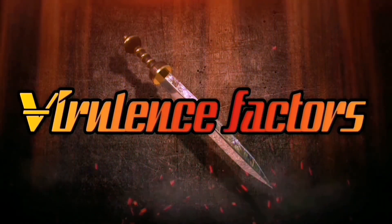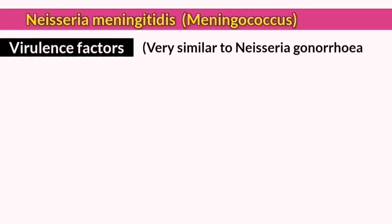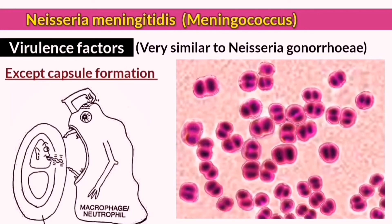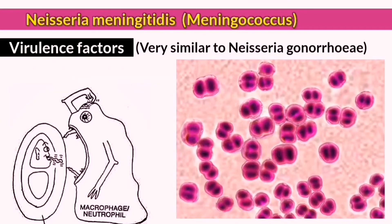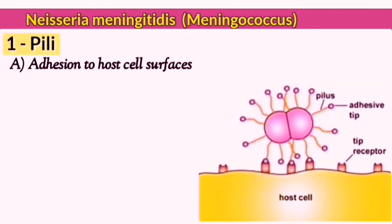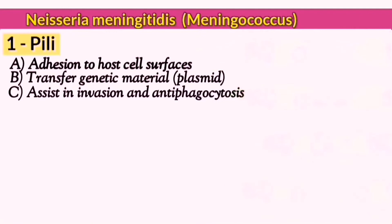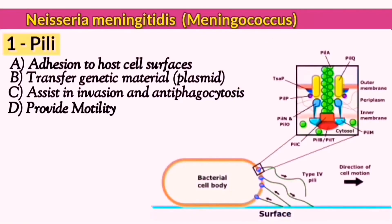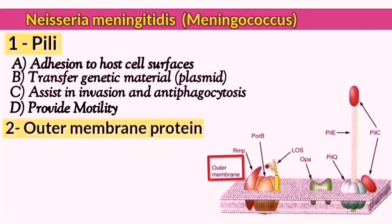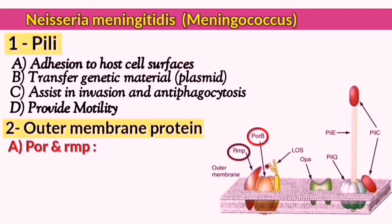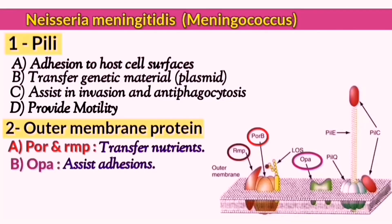The virulence factors of meningococci resemble those of Neisseria gonorrhea, except for the ability to form the capsule, which is an important distinction. Similar virulence factors include pili that play a vital role in adhesion and invasion of host cell surfaces, transfer of genetic material via plasmids, antiphagocytosis, and motility. Both meningococci and gonococci also carry outer membrane proteins such as porin proteins, reduction modifiable proteins which transfer nutrients into the bacterial cell, and opacity proteins which assist in adhesion to receptors on host cells.